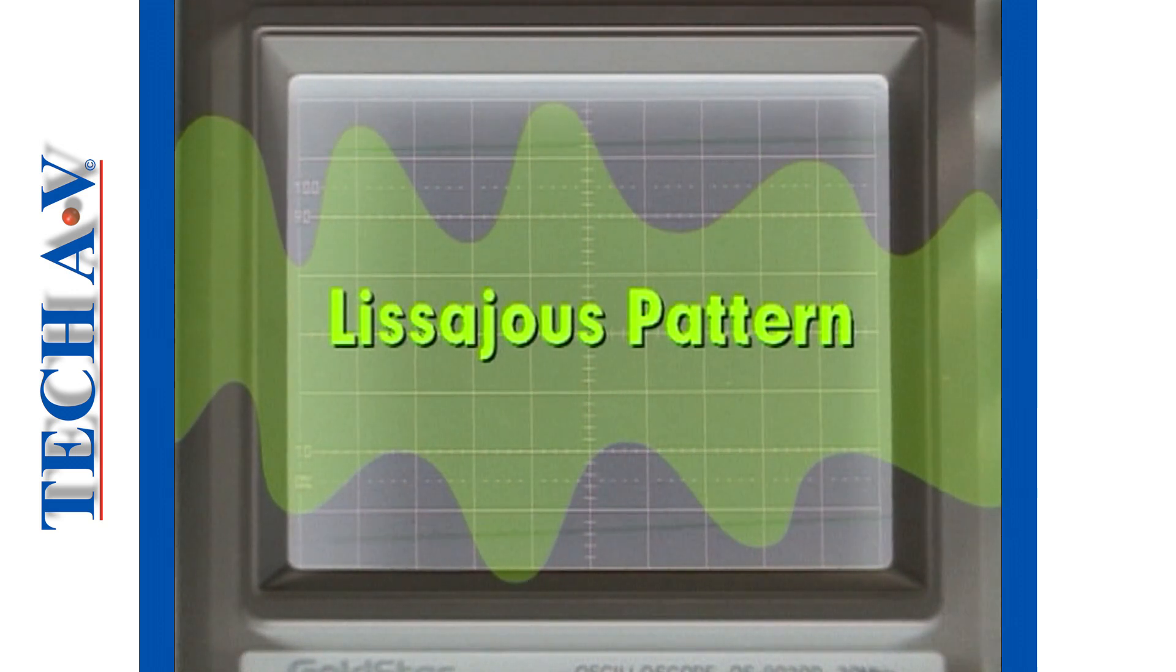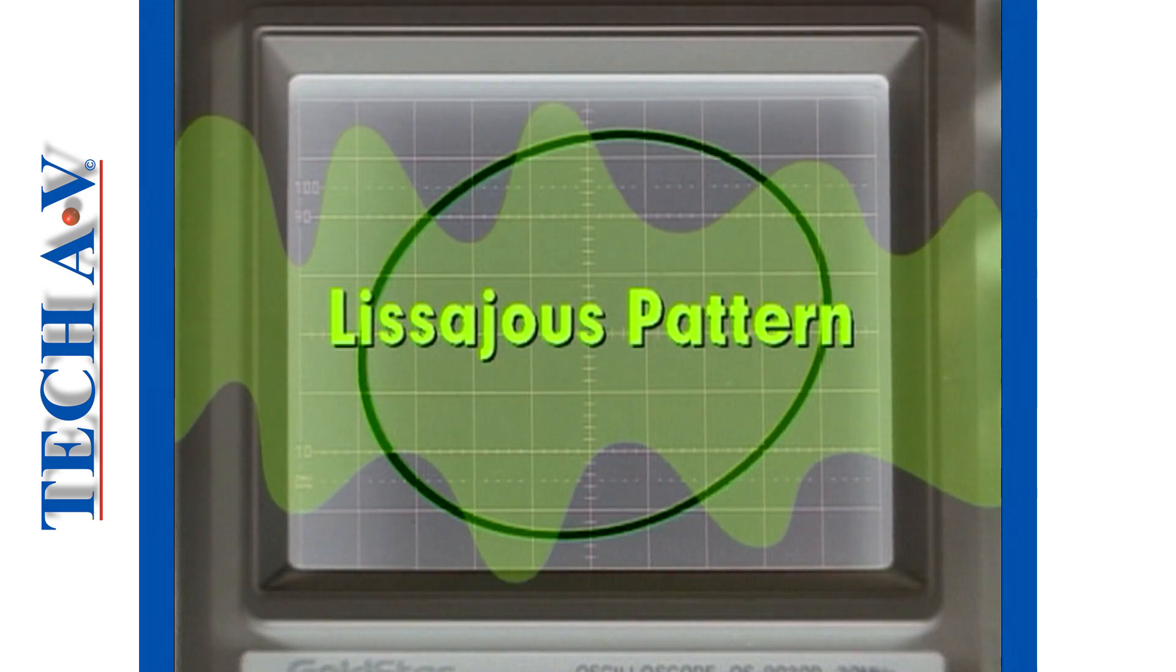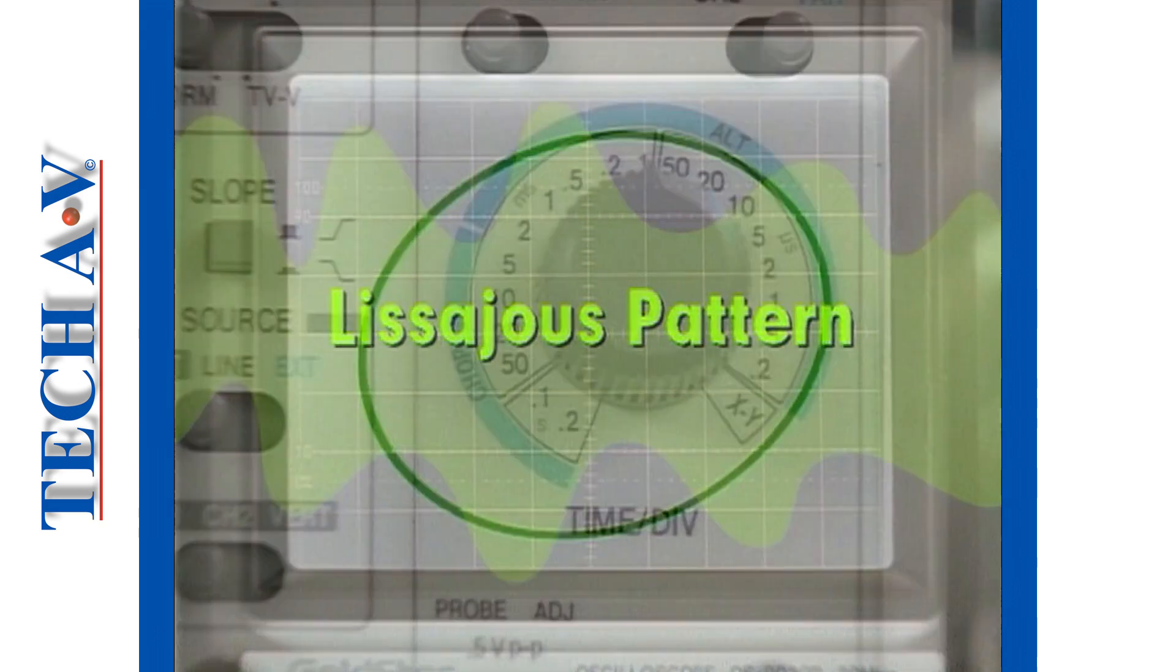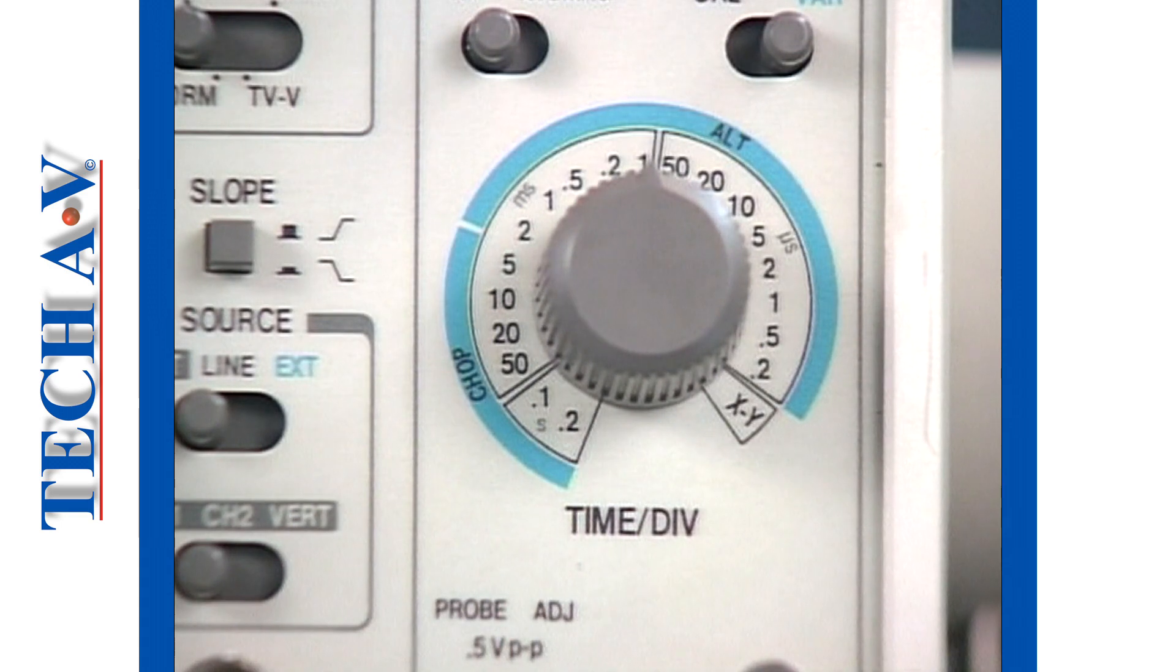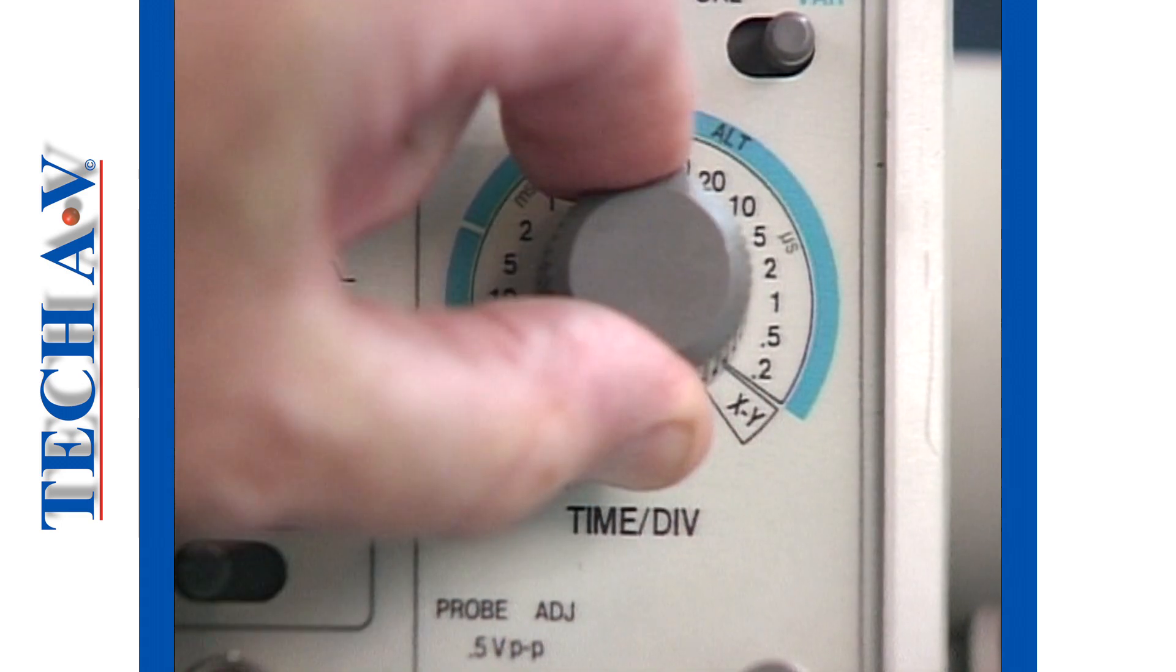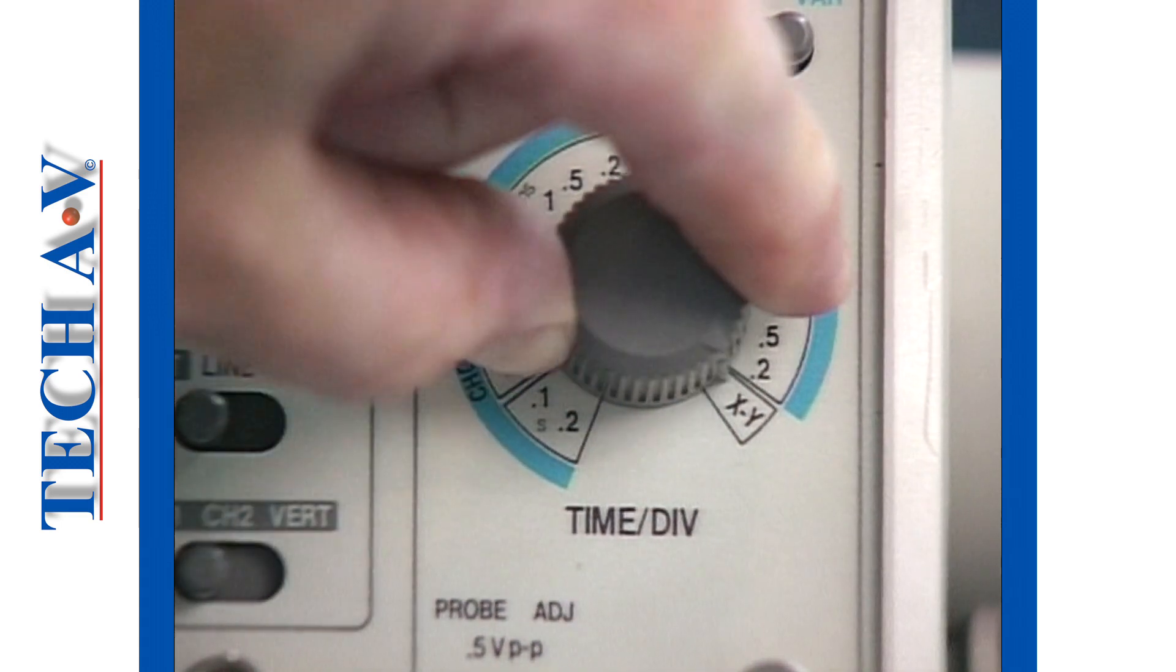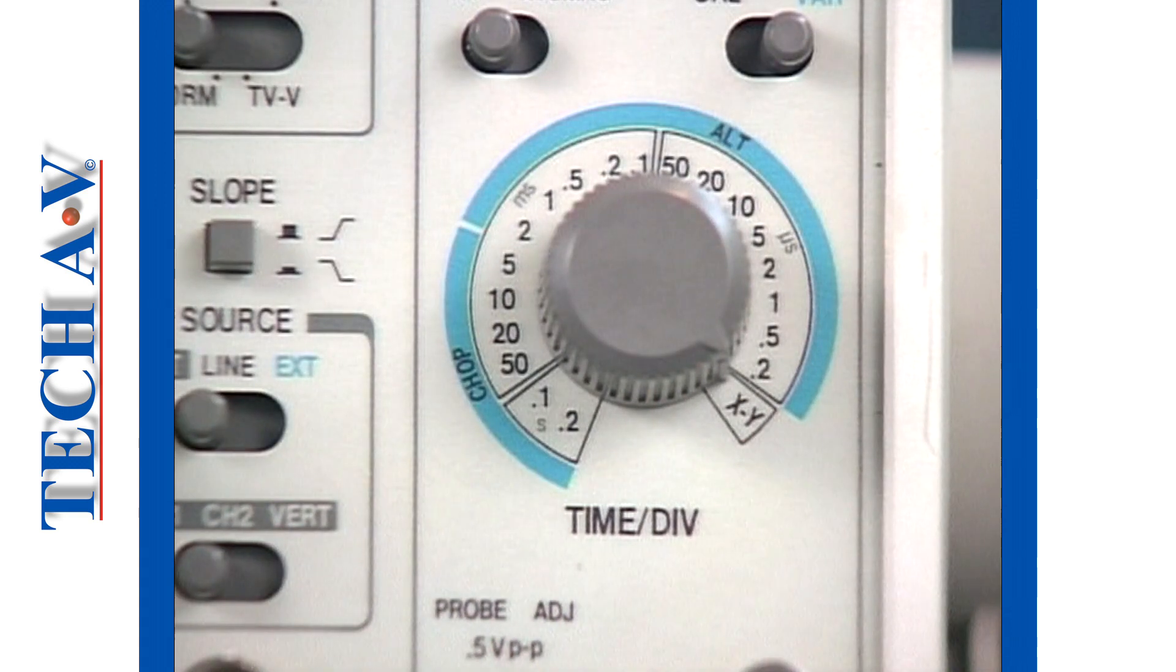Another method of measuring the shift between two sinusoidal signals is called the Lissajous pattern method. The scope setup is almost identical to the setup described in the previous sequence, with the exception that the horizontal time base is switched to the XY mode by turning the time per division control fully clockwise.